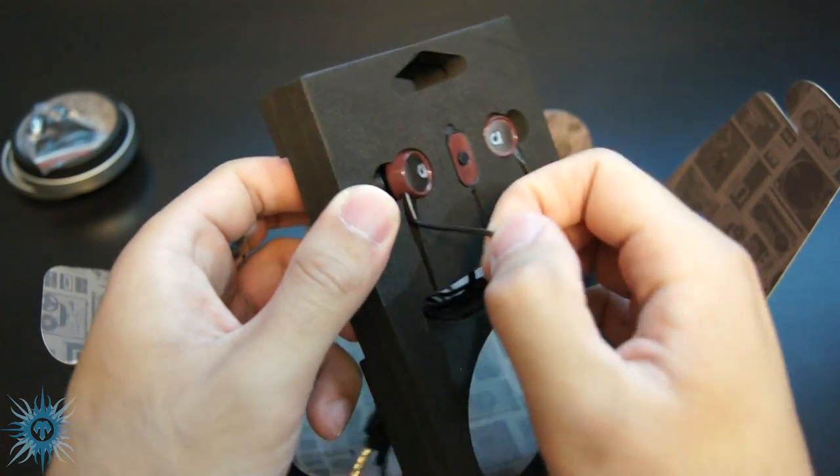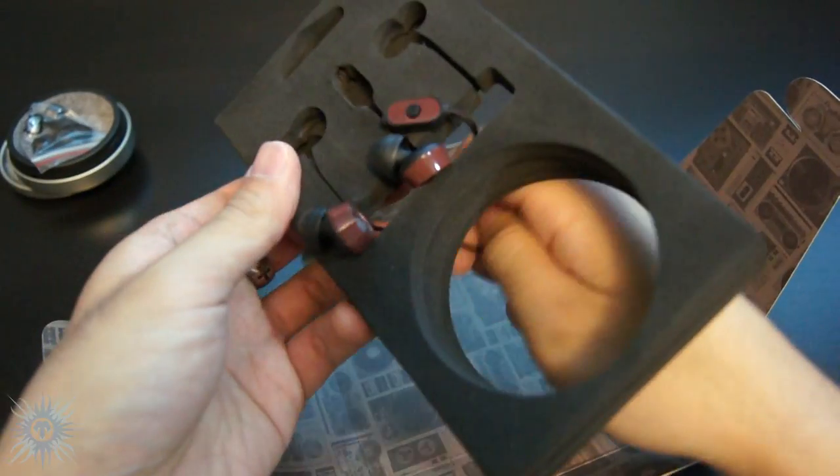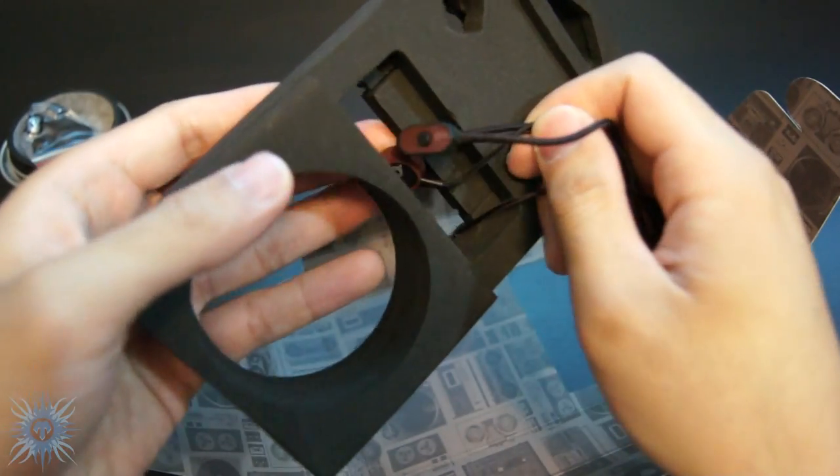So, back to the earphones, they are well protected during shipping in this foam holder, and you just need to take them out by carefully unpeeling them from the foam and pulling them through the holder.